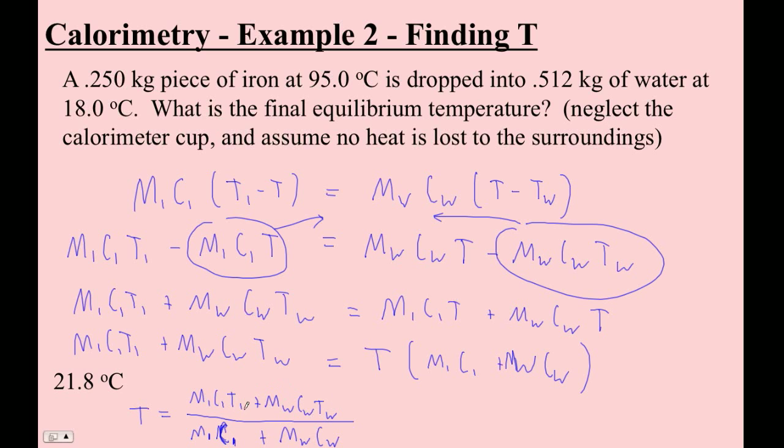I'm averaging Ti and Tw. Ti is 95 and Tw is 18. And I'm averaging those. The weights that they have are their mass and their specific heat, and that should make sense. Mass times specific heat is the amount of heat needed to change at a degree Celsius.